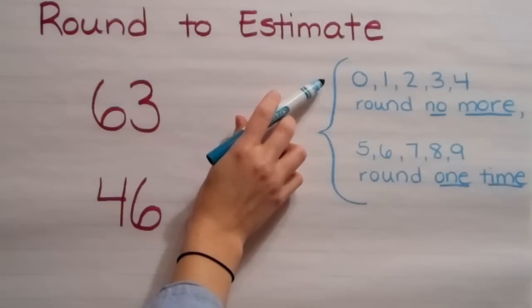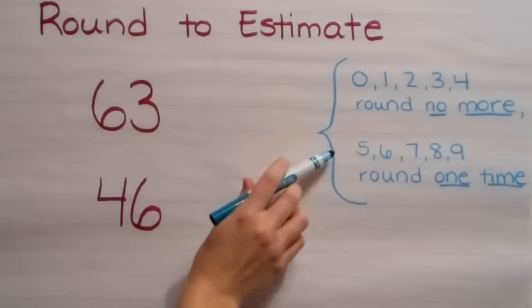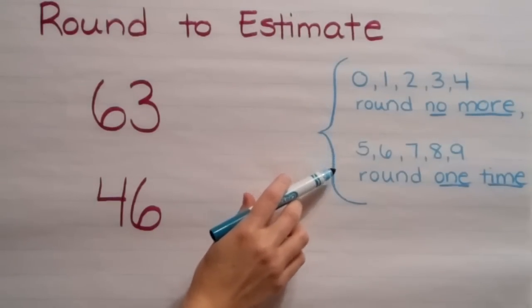Zero, one, two, three, four. Round no more. Five, six, seven, eight, nine. Round one time.